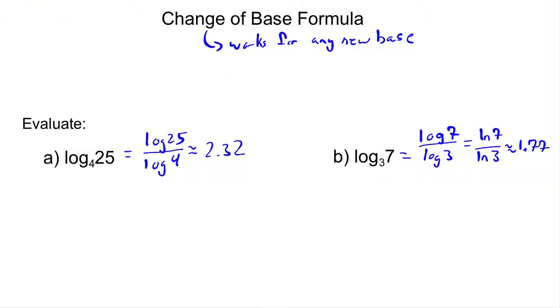Okay, pretty straightforward stuff here. The way I like to remember it is that this old base is a little bit lower, so I keep that low and I keep it in the denominator, whereas that 25 is a little bit higher, so that goes in the numerator.